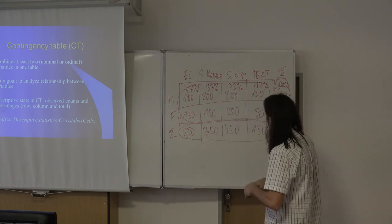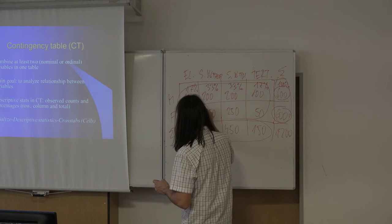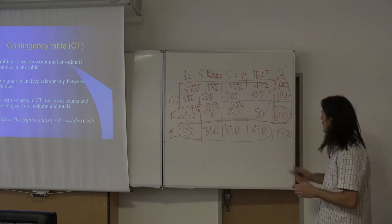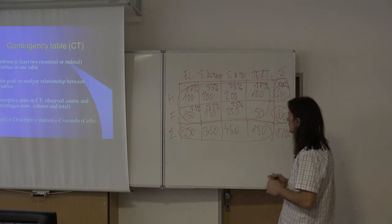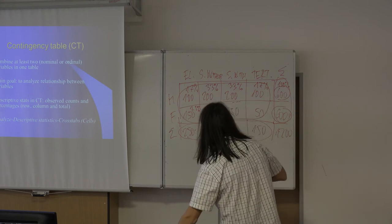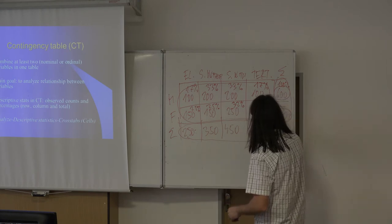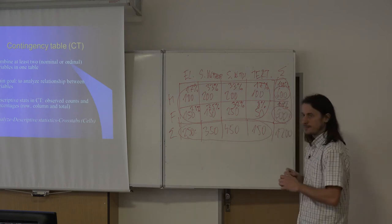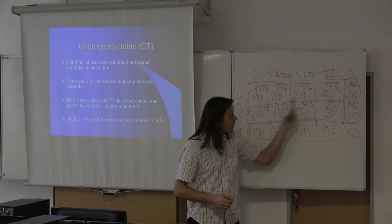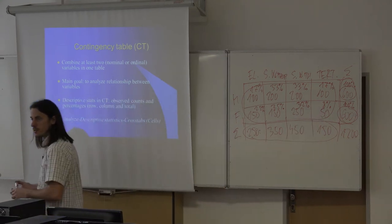For females: 150/600 = 25%, 150/600 = 25%, 250/600 ≈ 42%, and 50/600 ≈ 8%, totaling 100%. Comparing the row percentages for males (17%, 33%, 33%, 17%) and females (25%, 25%, 42%, 8%), we can now more easily see whether educational structures differ between genders. There do appear to be some differences in our data — particularly in the first two and last categories.